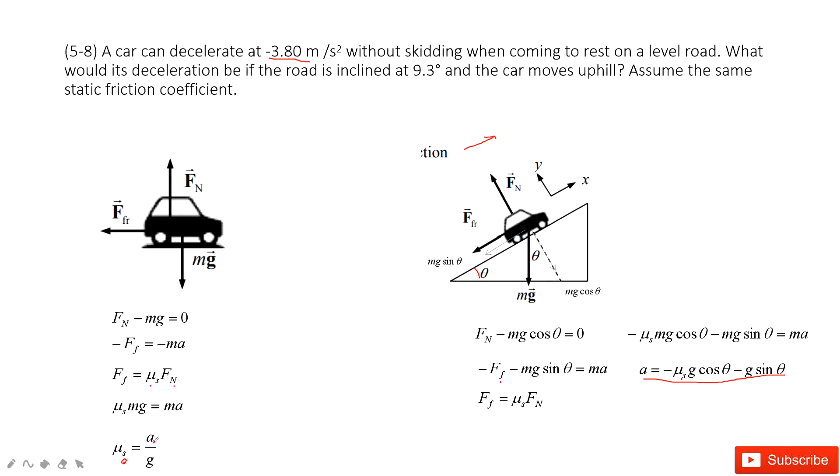After you can see in this equation, this a is given, 3.8, and the g is given. So it's easy for you to find this one, the mu s.